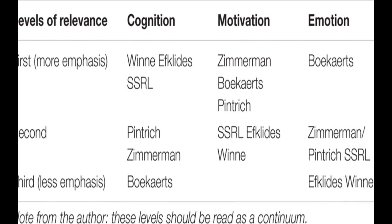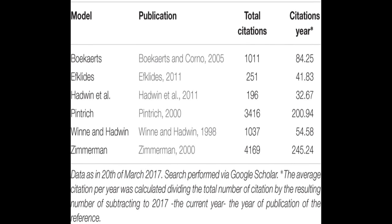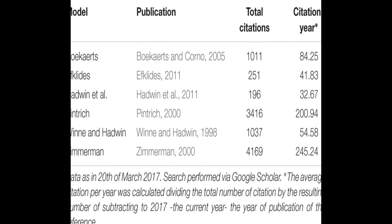The models are then compared in various aspects, such as phases and subprocesses, how they conceptualize metacognition, motivation, and emotion.